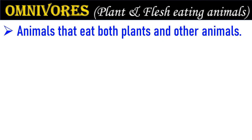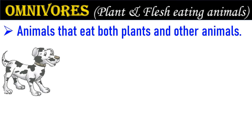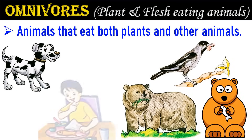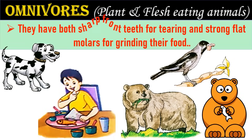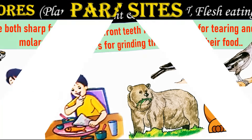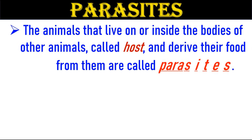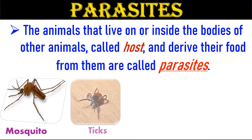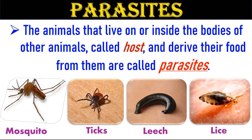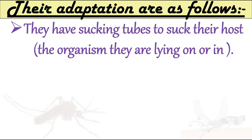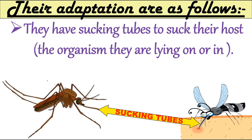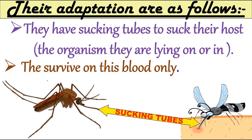Animals that eat both plants and other animals are called omnivores — dogs, crows, bears, and human beings are examples. They have both sharp front teeth for tearing and strong flat molars for grinding their food. Parasites are animals that live on or inside the bodies of other animals called hosts and derive their food from them. Mosquitoes, ticks, leeches, and fleas are some parasites. They have sucking tubes to suck blood from their host and survive on this blood.